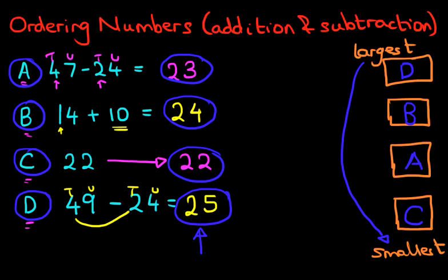So that is how we order numbers with addition and subtraction problems. Where required, solve the problem first and then work out which is the smallest and which is the largest.